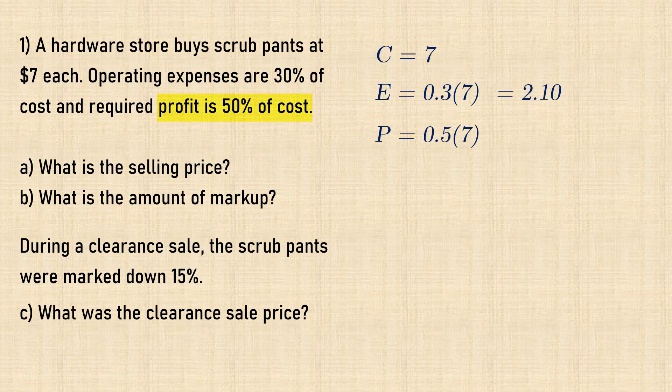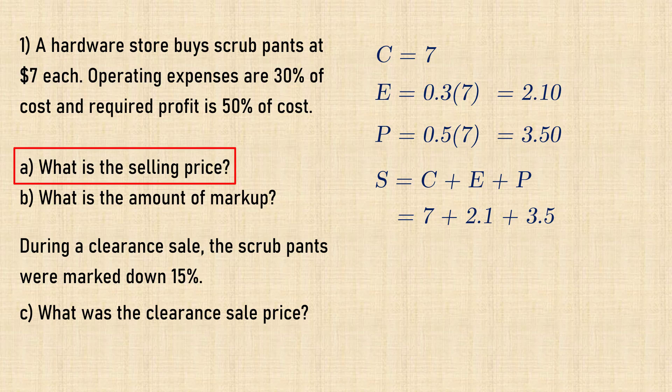And profit equals $0.5 times $7, which is $3.50. So for part A, selling price equals cost plus expenses plus profit, and that would give $12.60.